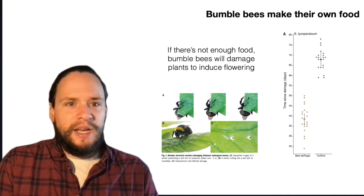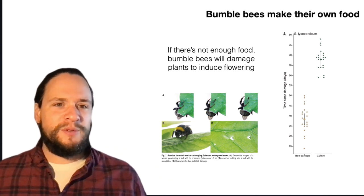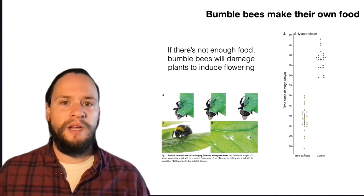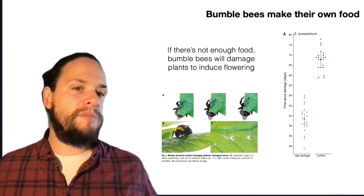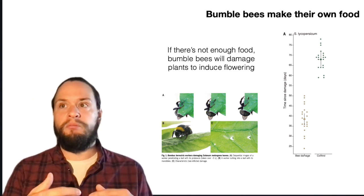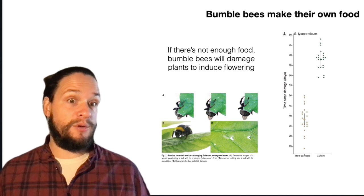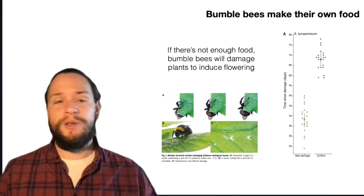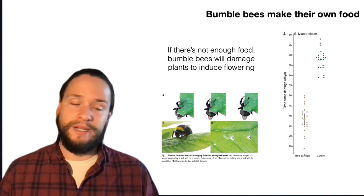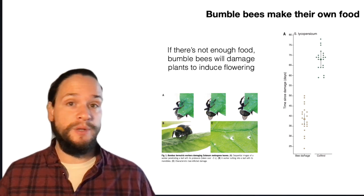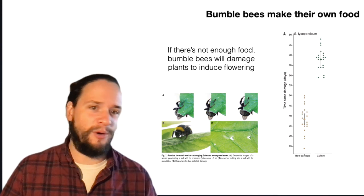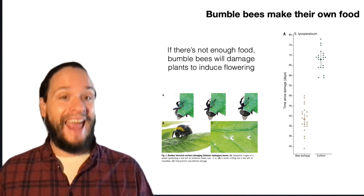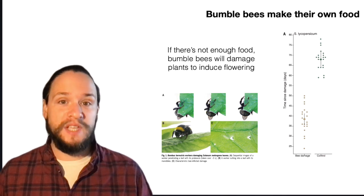And finally, I just want to tell you about one of my, another sort of amazing example of clever bumblebee behavior. So one thing that happens is sometimes, for whatever reason, there's not enough flowers or food in the environment around you, right? And so you might think that bees just say, well, we had a good run. There's no food, you know, better luck next year or to someone else that survives. But it turns out they can actually take an active role in producing food.